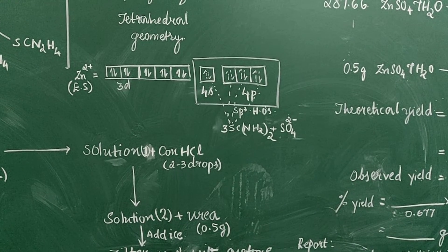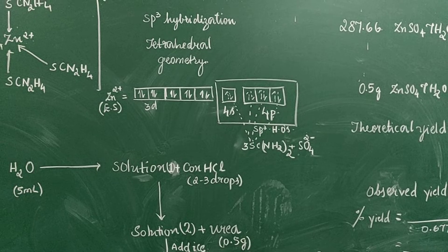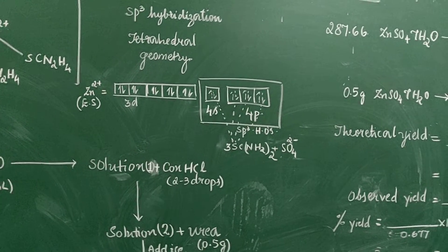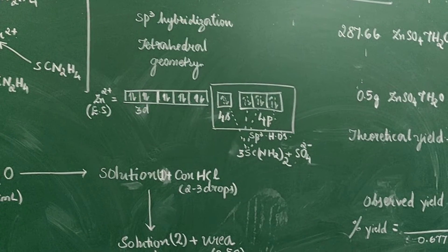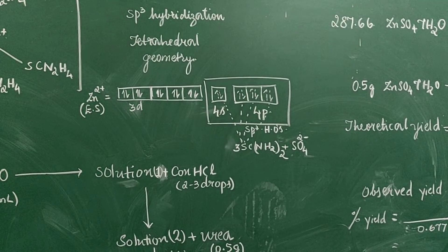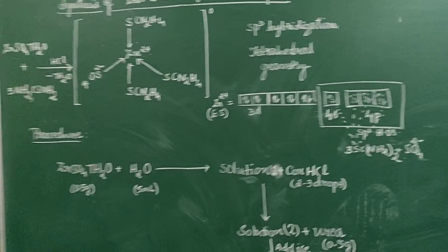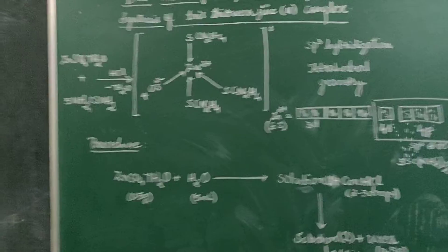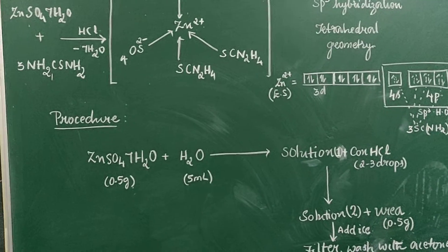We know sp3 hybridization will have a tetrahedral geometry. So these hybrid orbitals will be filled with the electrons given by the donors, thiourea and sulfate ions. Hence, we have a tetrahedral geometry for tris(thiourea) zinc(II) sulfate complex.